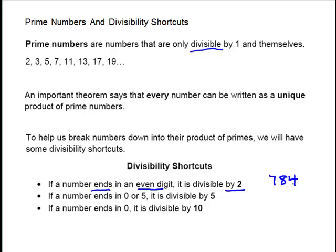Our next one. If a number ends in 0 or 5, it is divisible by 5. So the 784 is not divisible by 5. If we have 785 that is divisible by 5, or 780 would be divisible by 5. So that would help us to break it down.